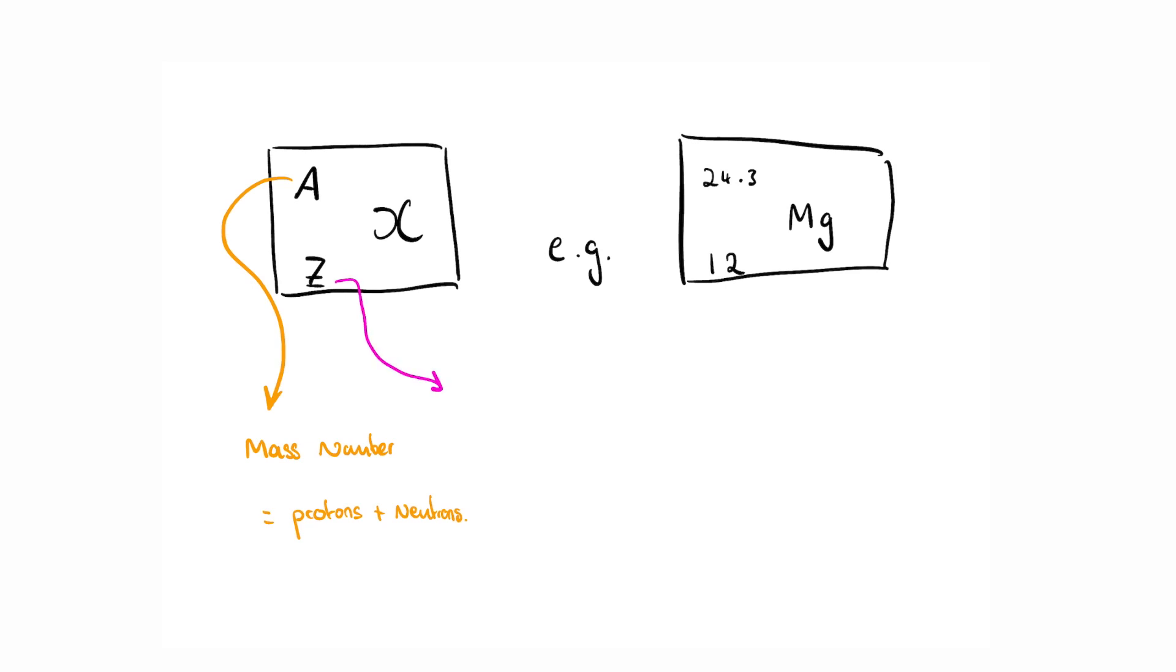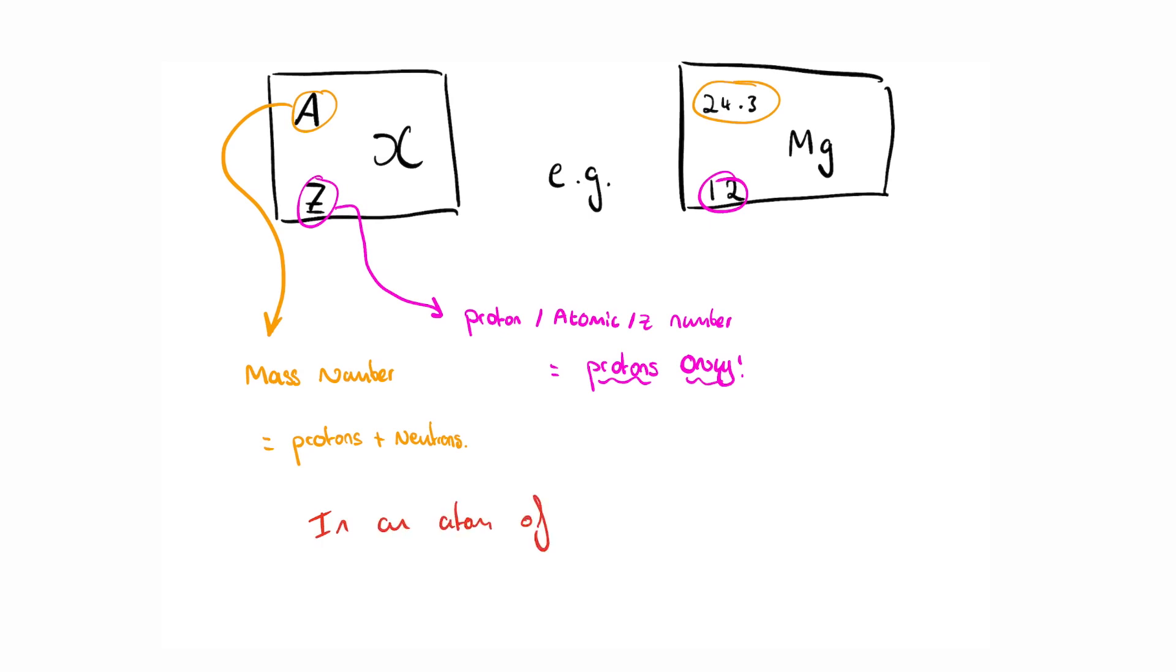The Z number, proton number or atomic number, all of those phrases are interchangeable, is the number of protons inside the atom. An atom has no overall charge. The atomic proton or Z number is the same as the amount of electrons in the energy levels around the nucleus for a neutral atom.